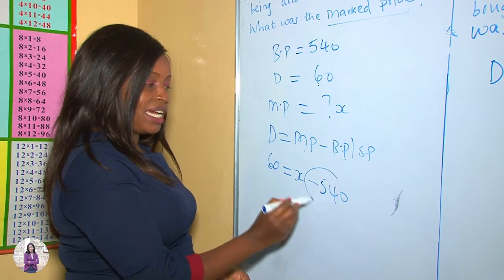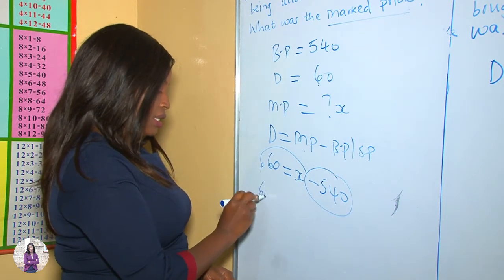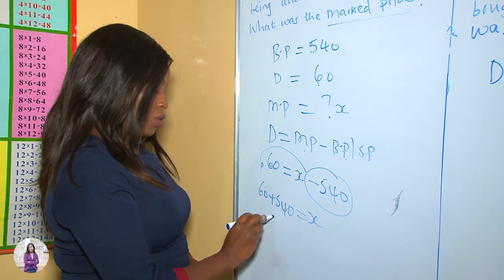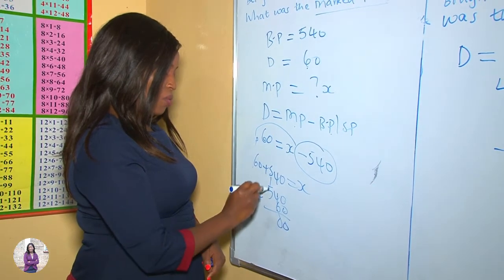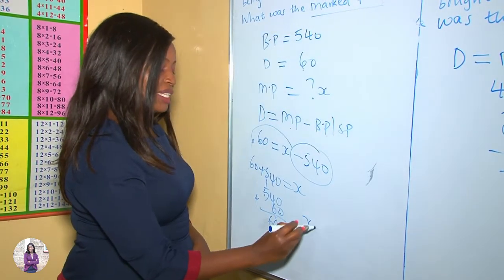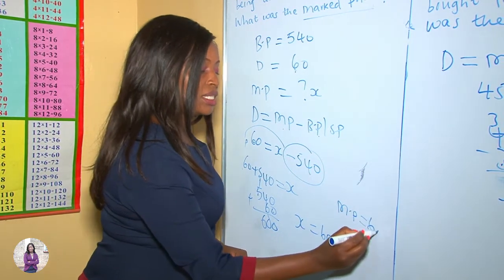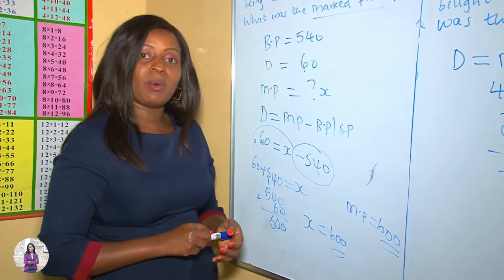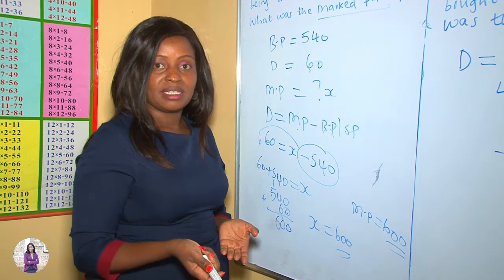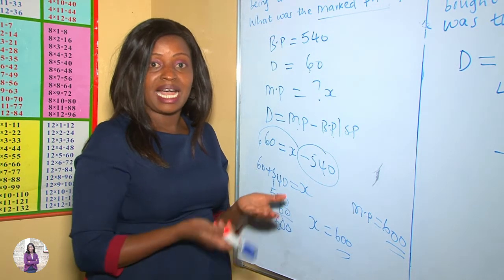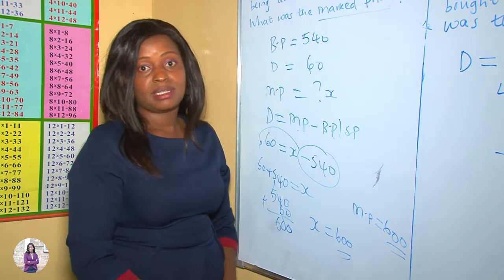So 540 plus 60: 0 plus 0 is 0, 4 plus 6 is 10 carry 1, 1 plus 5 is 6. Therefore x equals 600, so the marked price was 600 shillings. Remember, when buying goods under discount, the marked price is always bigger than the selling price because the marked price is the price before the discount is applied.